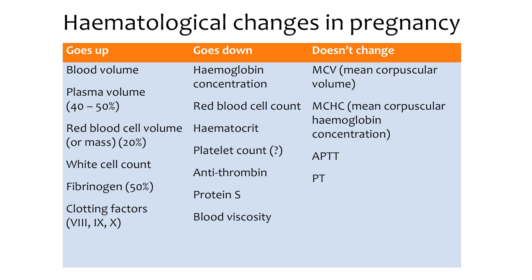What goes down? Haemoglobin concentration goes down — we often refer to this as physiological anaemia. Red blood cell count goes down. Haematocrit goes down. There is some debate about platelets, but it seems to go down. Antithrombin level goes down. Protein S goes down, and blood viscosity goes down.